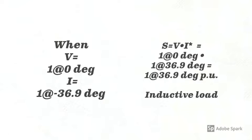For this example, complex power is 1 per unit voltage with 0 degree angle times 1 per unit current with positive 36.9 degree angle.